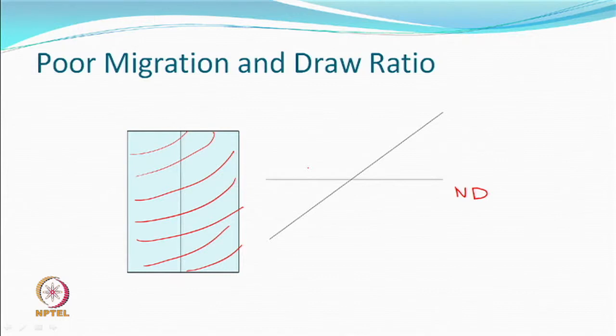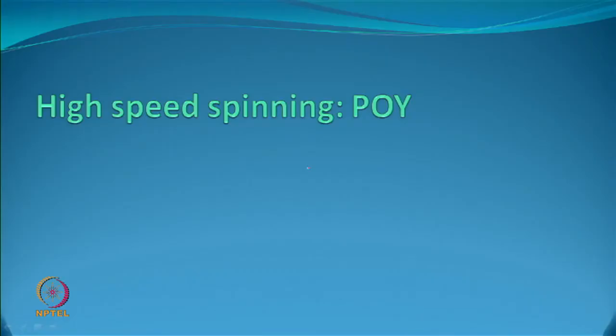With an undrawn yarn, poor migration meant that if the draw ratio remained the same, some yarns were getting drawn more than others. One suggestion was to reduce the draw ratio by 5, 7, or even 10 percent so that none of the filaments is overdrawn — otherwise you can actually get broken filaments. That was the situation with simultaneous draw texturing and its associated problems.